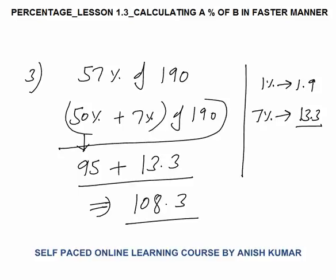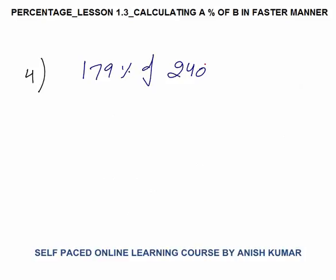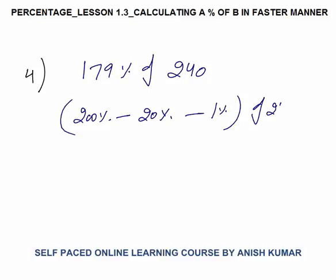Again, no need to write this working part in the exam — you have to think verbally. Fourth question is 179 percent of 240. The better approach would be 200 percent minus 20 percent minus 1 percent of 240. Now 200 percent means double: 100 percent of 240 is 240, so 200 percent of 240 would be double — 240 into 2, that is 480.